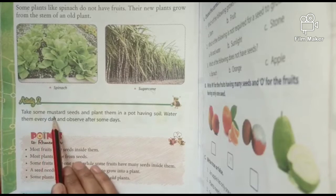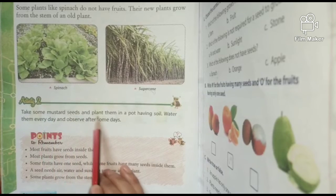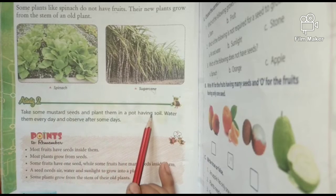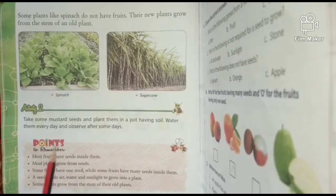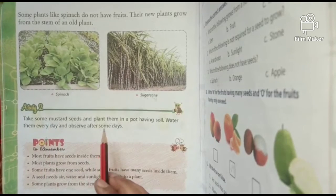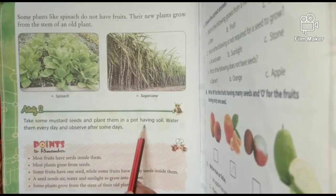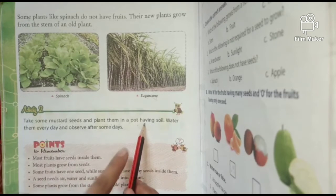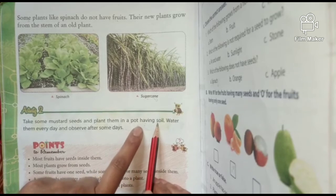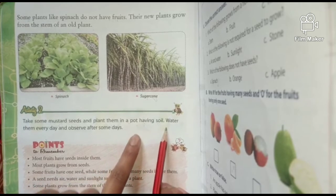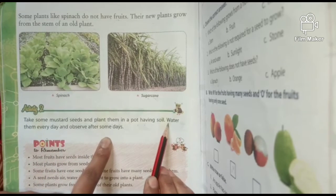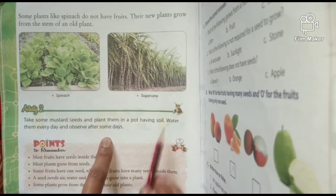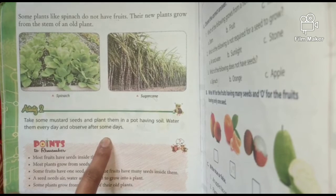Activity: Take some mustard seeds — mustard means sarson ke beej — and plant them in a pot having soil. Water them every day and observe after some days — unhmein paani daalna aur kuch din baad usse dekhna.